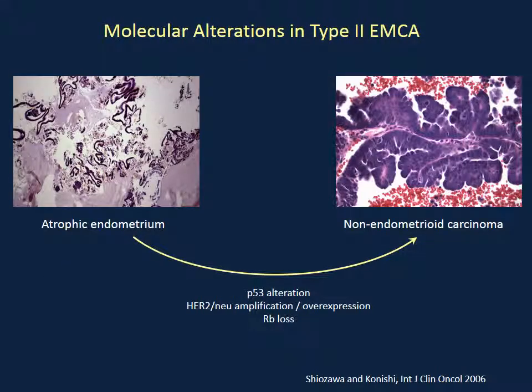The other type of endometrial cancer — the one responsible for the most deaths — is the type 2 endometrial cancer. That would include papillary serous cancer, clear cell cancer, and a mixed Müllerian tumor or carcinoma. There is often atrophic or normal endometrium that looks completely benign, and suddenly there must be some catastrophic molecular event, probably related to p53 mutation, that leads to the sudden formation of this cancer.